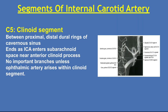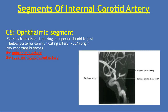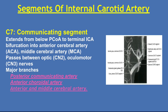Clinoid segment: between the proximal and distal dural rings of the cavernous sinus; the artery enters the subarachnoid space near the anterior clinoid processes. No important branches unless the ophthalmic artery arises within the clinoid segment. Ophthalmic segment: extends from the distal dural ring of the superior clinoid to the posterior communicating artery origin. Two important branches: ophthalmic artery and superior hypophysial artery. Communicating segment: extends from below the posterior communicating artery to the terminal internal carotid bifurcation into anterior cerebral artery and middle cerebral artery, passing between the optic and oculomotor nerves. Major branches: posterior communicating artery, anterior choroidal artery, anterior and middle cerebral arteries.